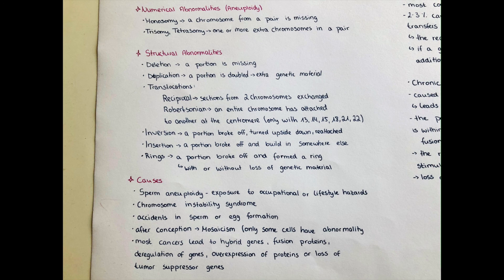There can be different causes for chromosome mutations. For sperm aneuploidy, it's usually exposure to occupational or lifestyle hazards, which can increase the risk of aneuploid spermatozoa. Examples of that are benzene, insecticides, and smoking.